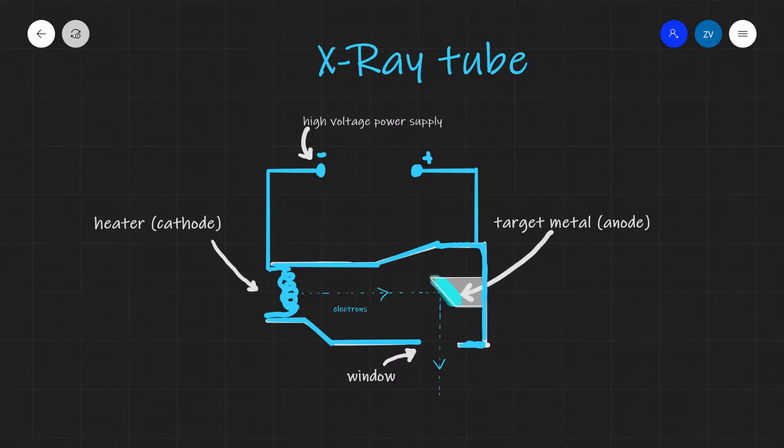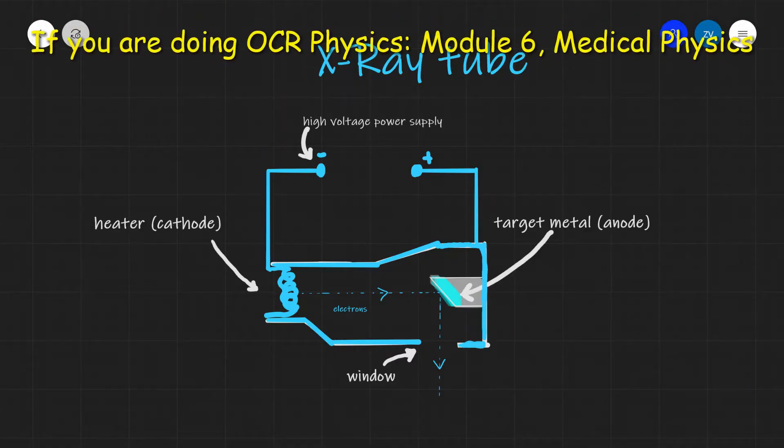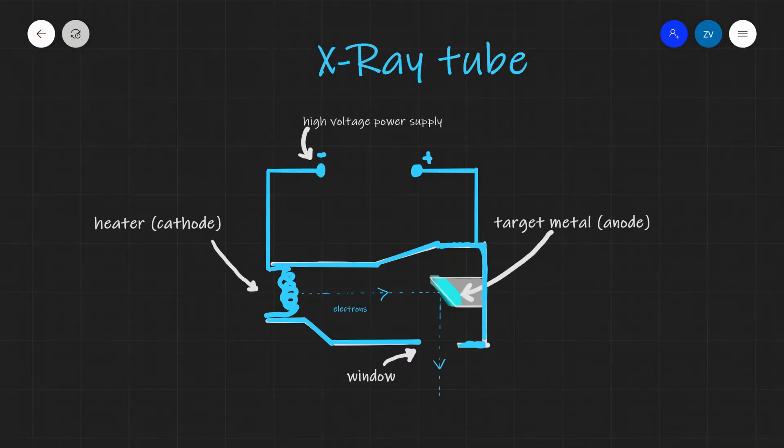Hello everyone, welcome back to Z-Physics. Today we are going to be doing some medical physics. If you are following the OCR Physics A specification, this is the medical physics portion of module 6. So let's start with the production of x-rays.